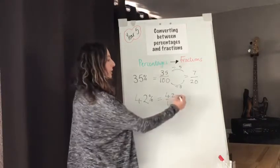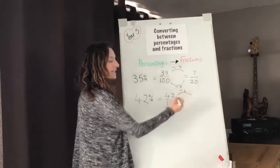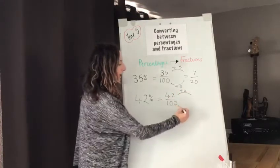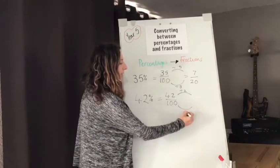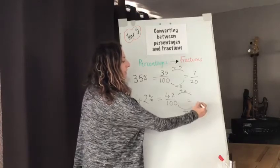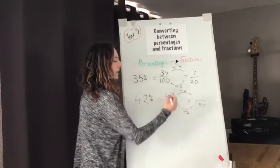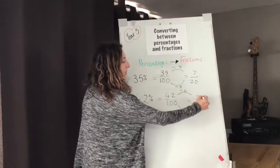So using the rules of equivalent fractions we are going to divide our numerator by 2 and we're going to divide our denominator by 2. 100 divided by 2 gives us 50 and 42 divided by 2 gives us 21.